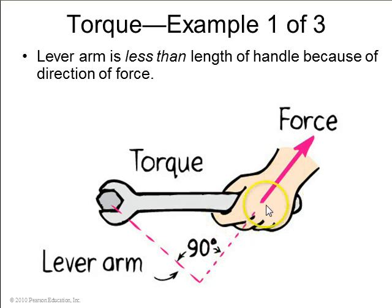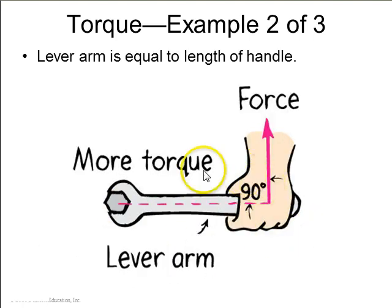If you have a wrench being pulled at an angle, then the lever arm is the distance between the rotation axis and a line that's drawn through the force. And that lever arm makes a 90 degree angle between the line that goes through the force and the line that goes through the rotation axis of the object. And so here the lever arm is less than the length of this wrench because you're pulling it at an angle. If you pull it right at 90 degrees, then the lever arm equals the length of the wrench.